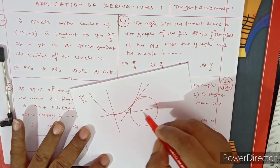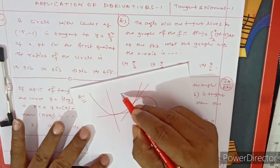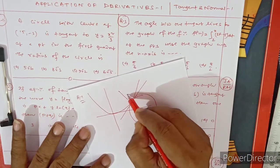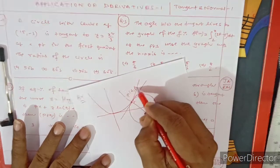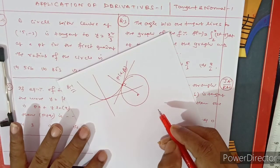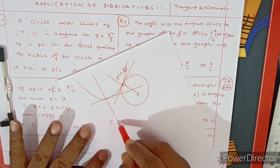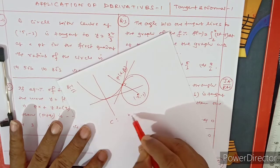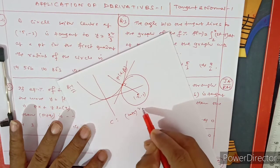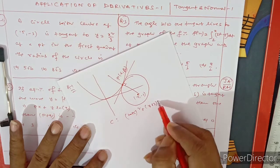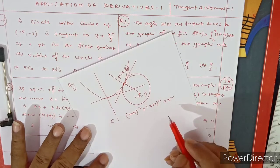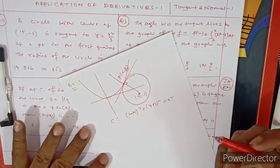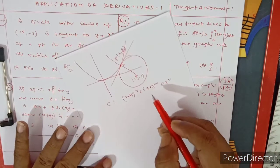The key idea: the normal to the curve always passes through the center of the circle. So the normal passes through (15, −3). Let the point of tangency be (α, β). The circle equation is (x−15)² + (y+3)² = r². We need to find the coordinates of point P — once we get that, we can find the radius.